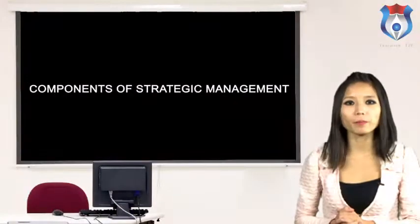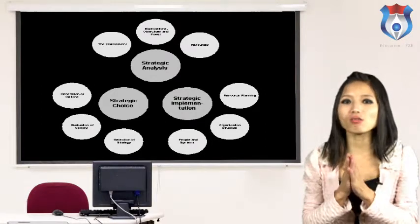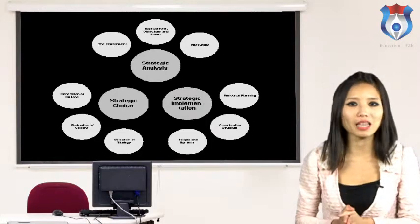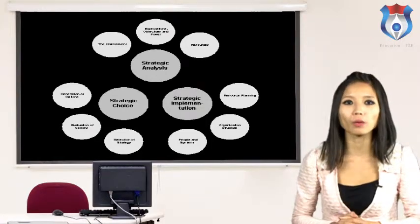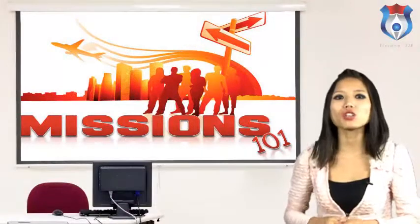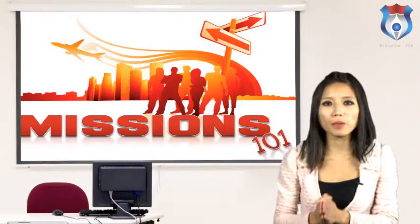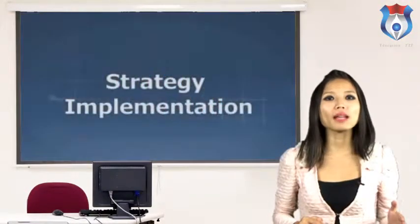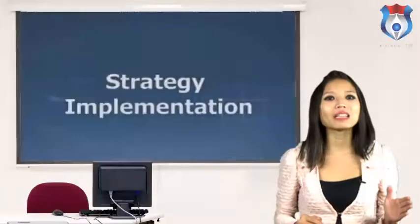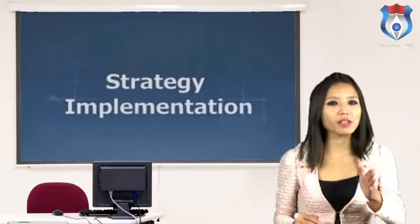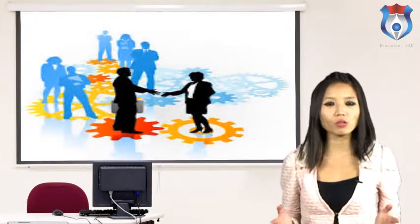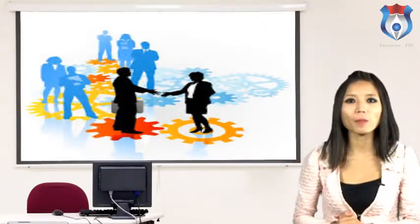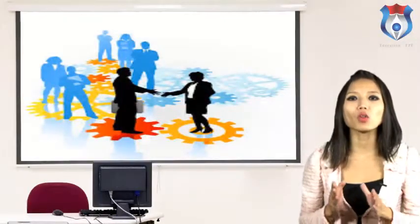Components of strategic management: There are three major components — strategy formulation, strategy implementation, and strategy evaluation and control. In the strategy formulation component, the key elements are vision, mission, goals, and objectives of the organization. In the strategy implementation component, there are at least three key elements: organizational structure, people and leadership, and organizational systems and processes. This is the component where action begins for the organization.